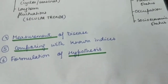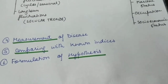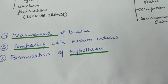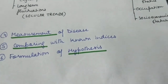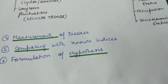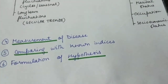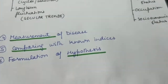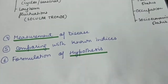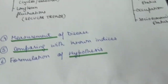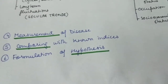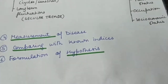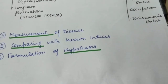The next step is comparing with known indices. Whatever results you have obtained, you compare them with known indices — for example, what was the prevalence of the disease last year. Comparing current results against previous years' data is the step of comparing with known indices, after which you formulate a hypothesis.